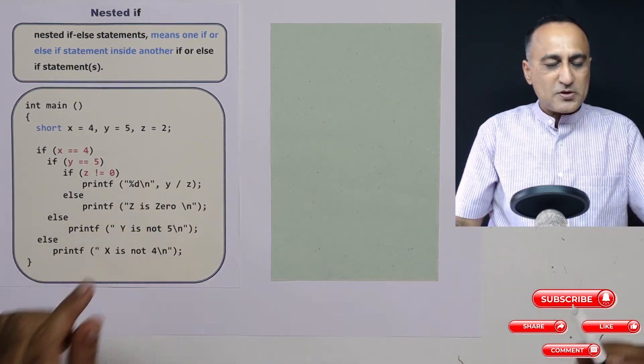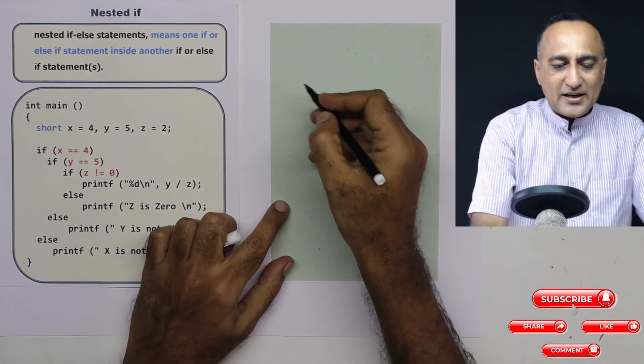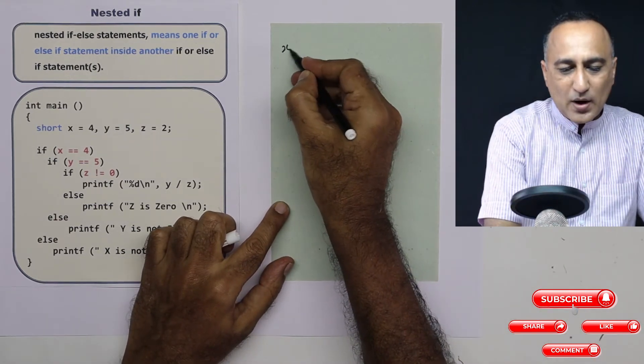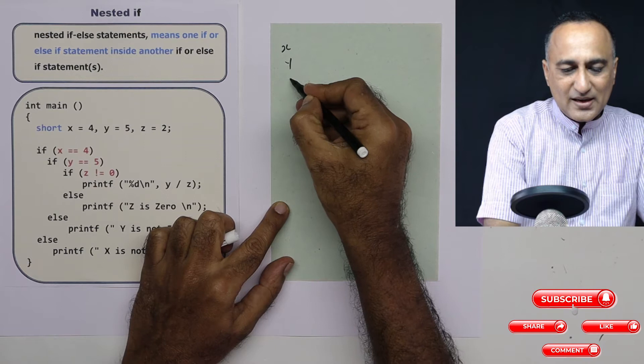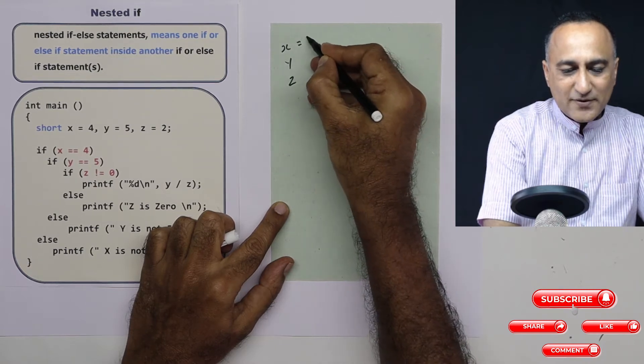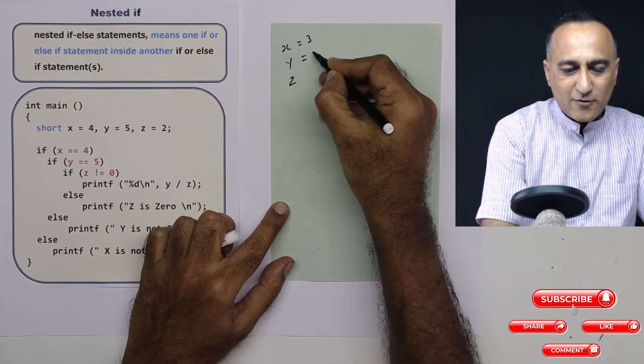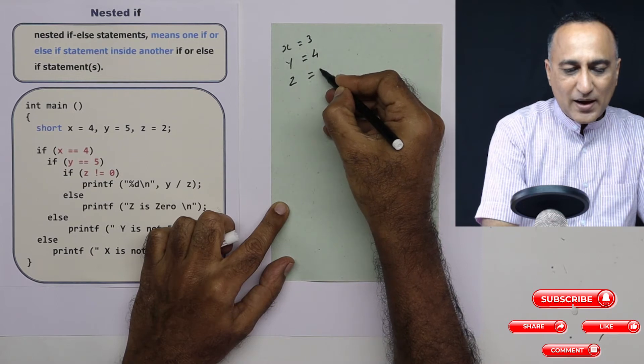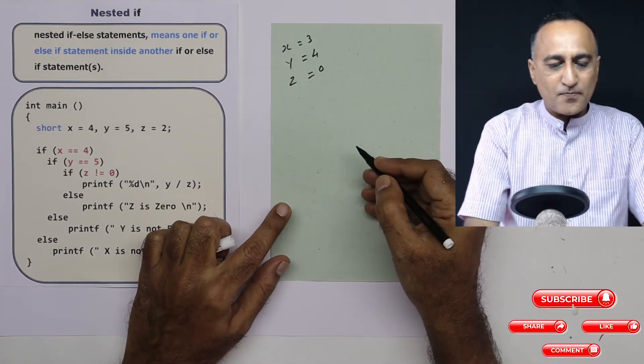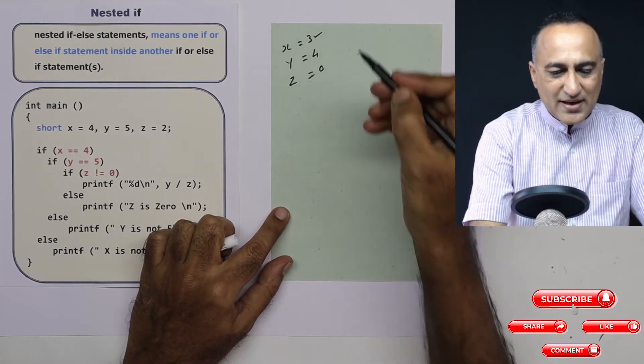Now in order to understand this piece of code it's important to take different values of x, y, and z. Let's say I take the value of x as 3, the value of y as 4, and the value of z as also 0.